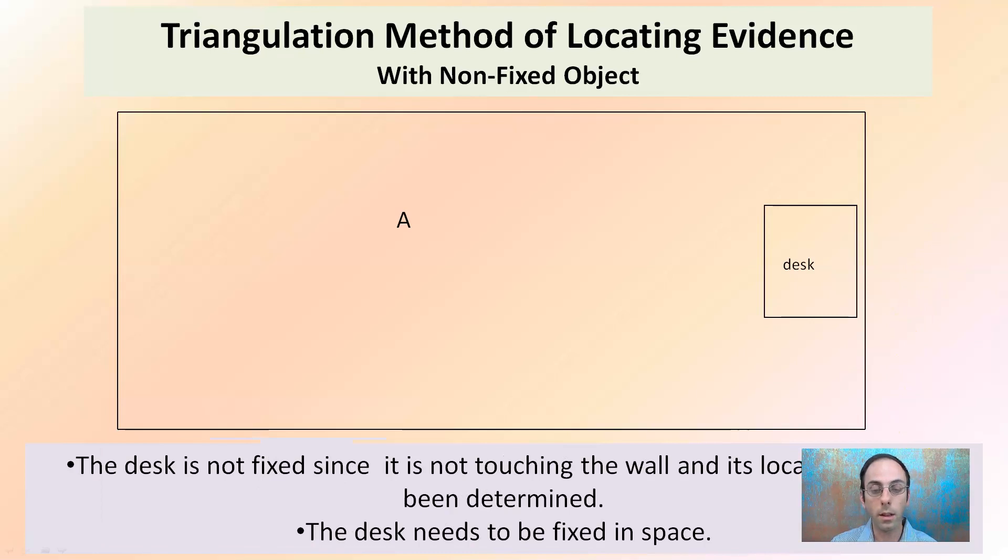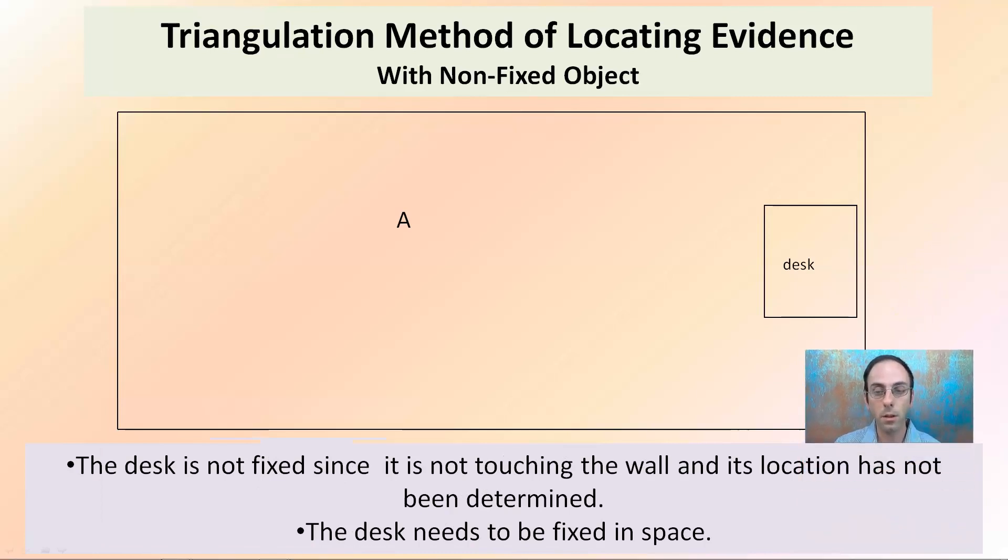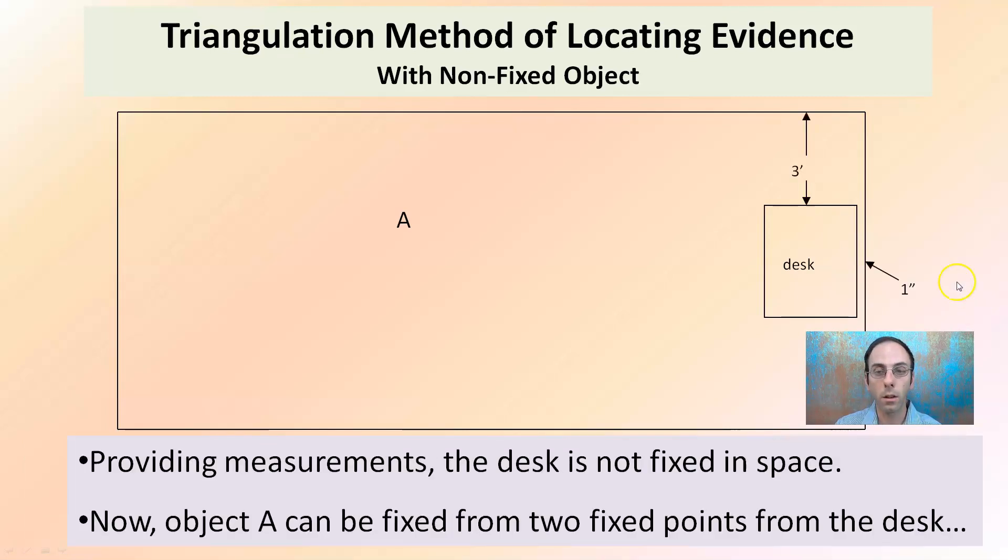So the desk is not fixed since it's not touching the walls. The desk needs to be fixed in space. We have to measure that to start. Here it is, one inch from this wall and three feet from this wall. Providing measurements, the desk is now fixed in space. Now object A can be fixed to the two fixed points of the desk. Now we've established where that desk is. Now we can measure from there.